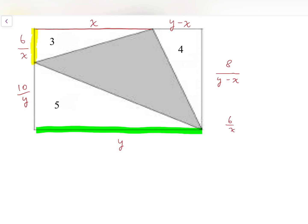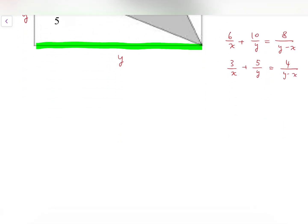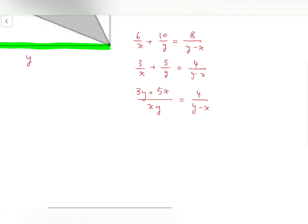So we have 6 over x plus 10 over y equals 8 over y minus x. Simplifying, we have 3 over x plus 5 over y equals 4 over y minus x. And adding the fractions, we have 3y plus 5x over xy equals 4 over y minus x.